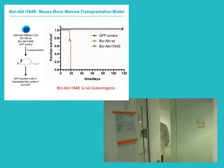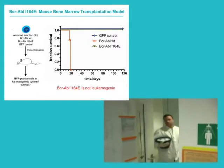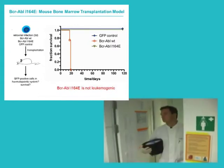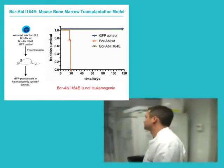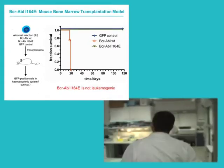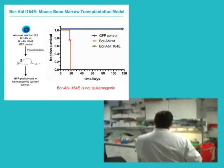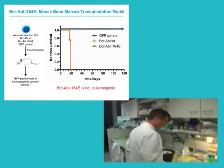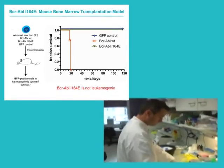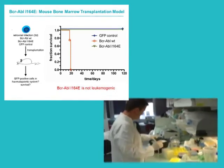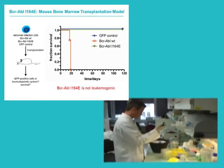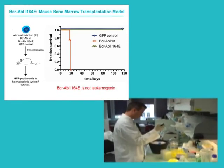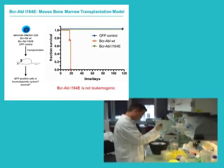In a mouse model for chronic myelogenous leukemia, if you don't have this isoleucine, you actually fail to kill the animals. So in many ways it is essential for the in vivo activity of BCR-ABL in this model.